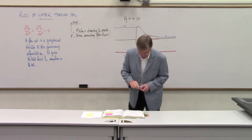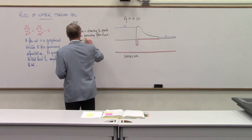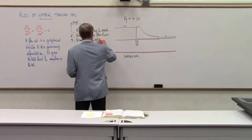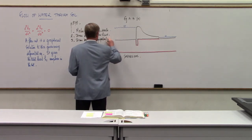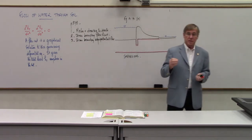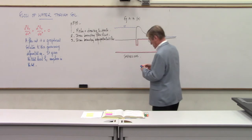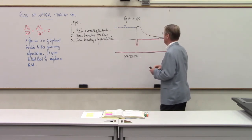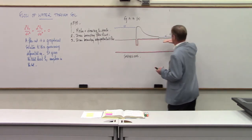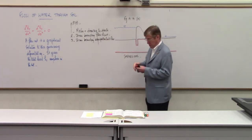Step three: draw the boundary equipotential lines. Equipotential means that along one of these lines the total head is constant. To find the first boundary equipotential line, we need to locate where the total head is uniform — that's at the upstream face of the flow net.